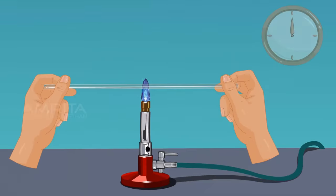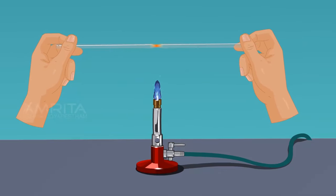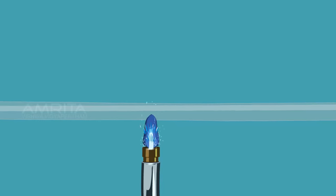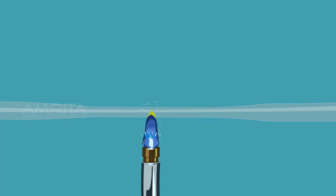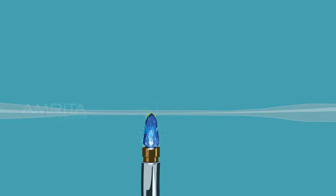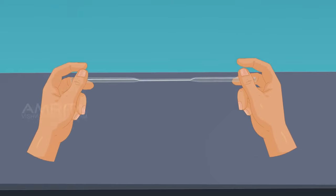Keep rotating the tube till it softens. Take the tubing out of the flame and gently pull the two ends in the opposite directions. The middle portion is drawn out to a thickness of about two millimeters. Allow the tubing to cool.